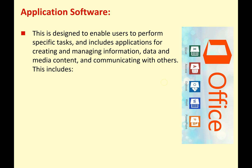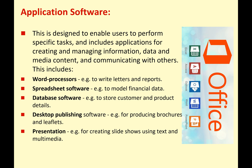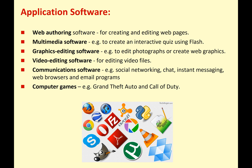Application software is designed to enable users to perform specific tasks, and includes applications for creating and managing information, data, media content, and communicating with others. Basically, application software is the software that we use when we use a computer. When you turn on your computer, tablet, or smartphone, you want to use apps and programs — these are the things we really use computers for. There are lots of different types: word processors, spreadsheets, database software, desktop publishing, presentation, web authoring, multimedia, graphics editing, video editing, communication software, and even games like Grand Theft Auto or Call of Duty. These are all apps, these are all software programs.